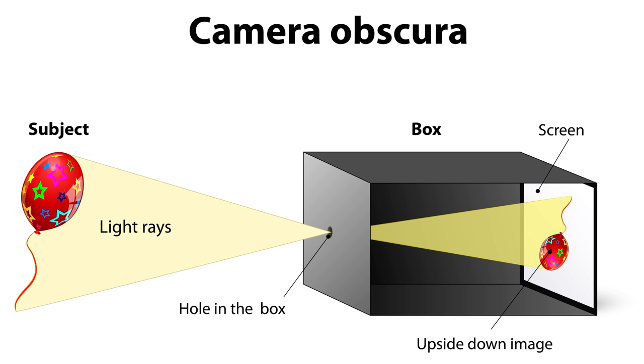So how a pinhole camera works is it only lets through light at a specific angle depending on the location on the backdrop. So what that does is it preserves the location of the incoming light.